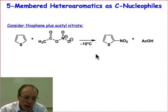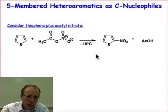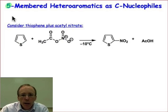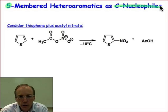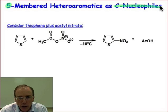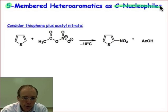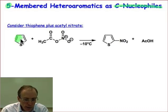I want to compare and contrast the behavior of five-membered and six-membered rings in this mode of reactivity, in which the π system serves as the nucleophile — electrophilic aromatic substitution reactions like we were considering in the previous webcast, but now with the five-membered heteroaromatics.